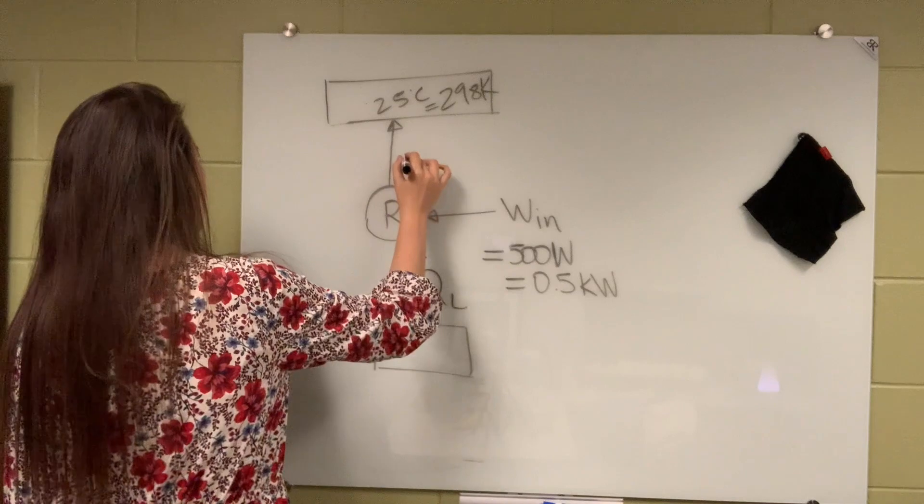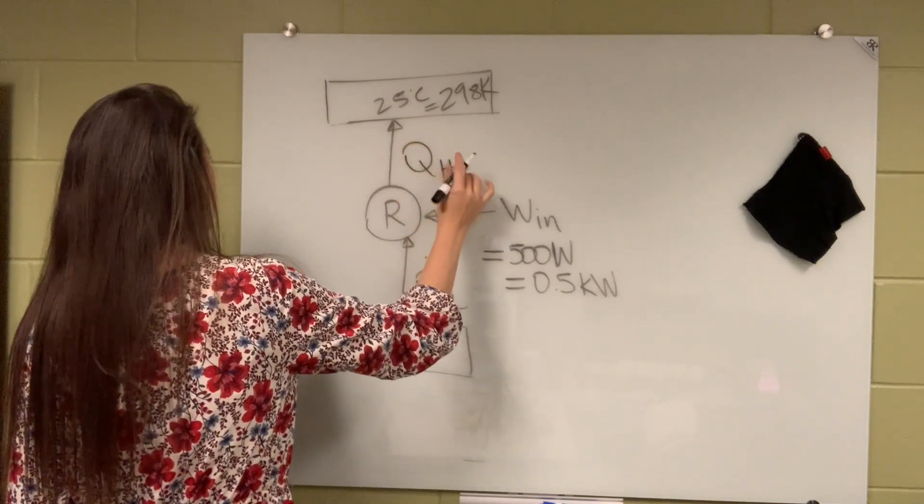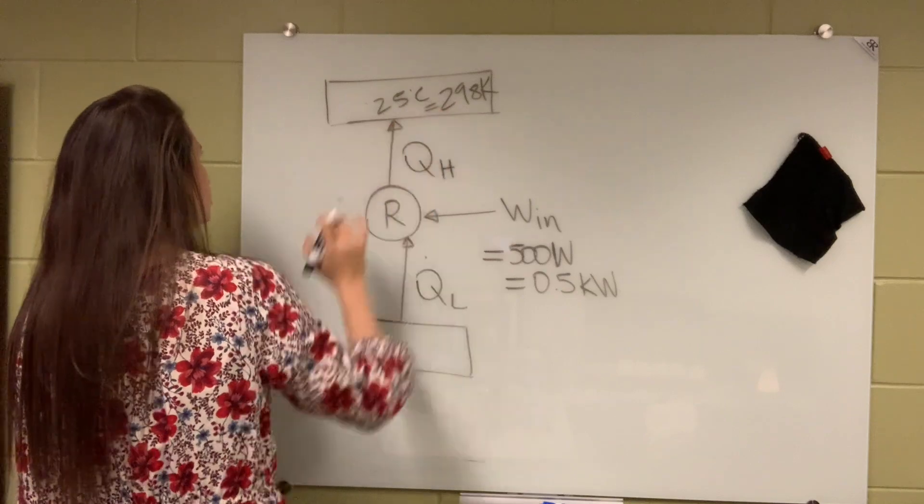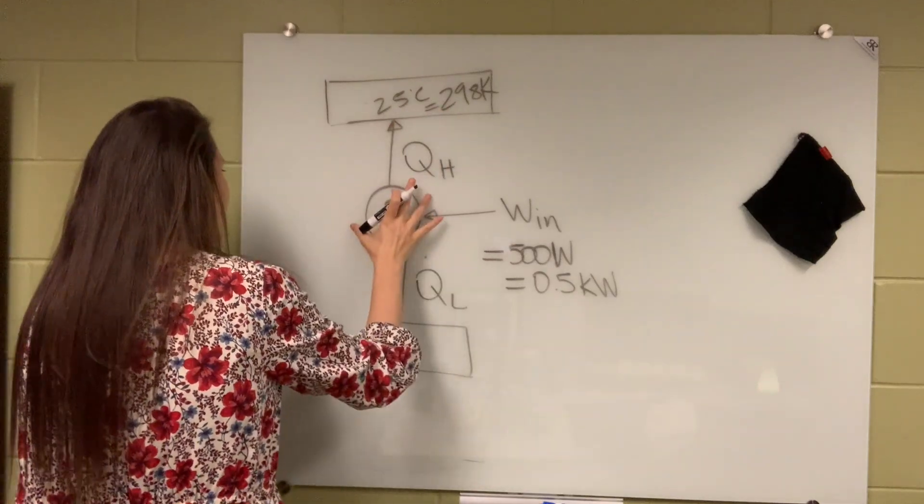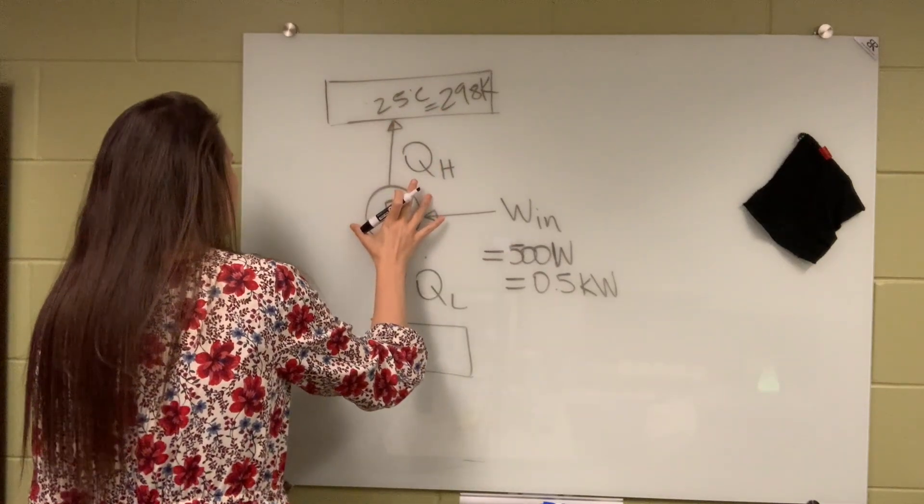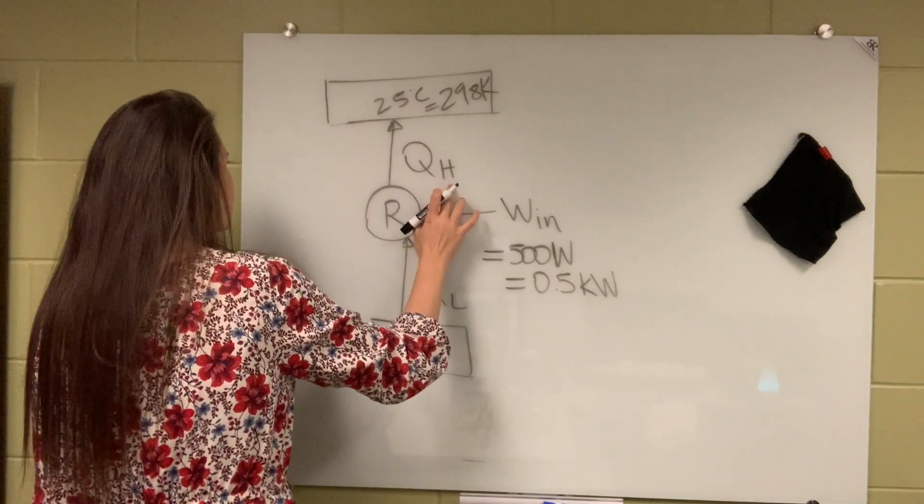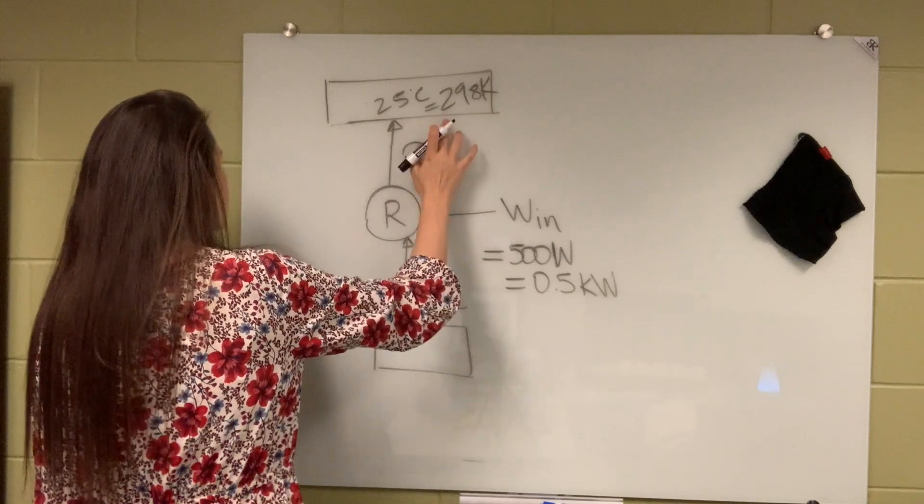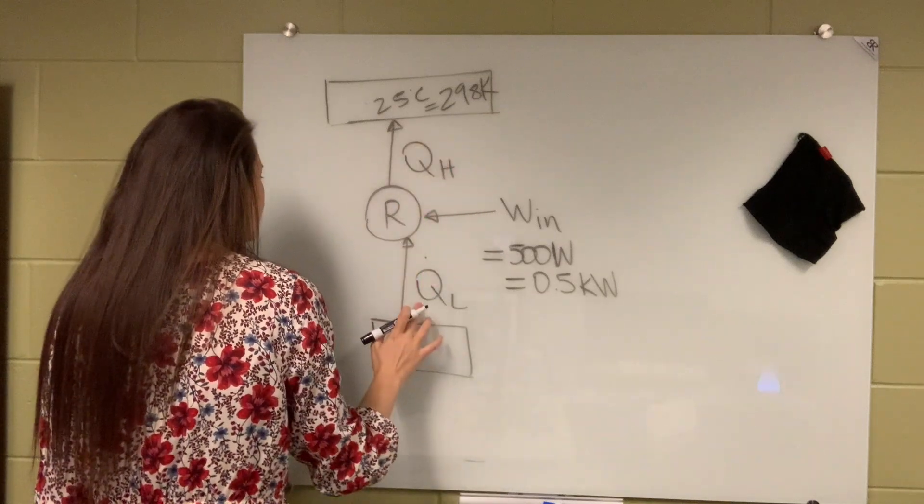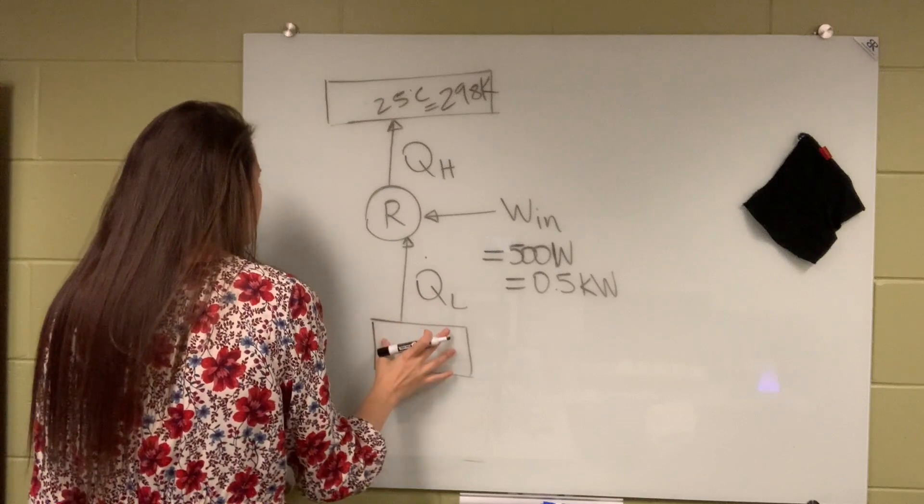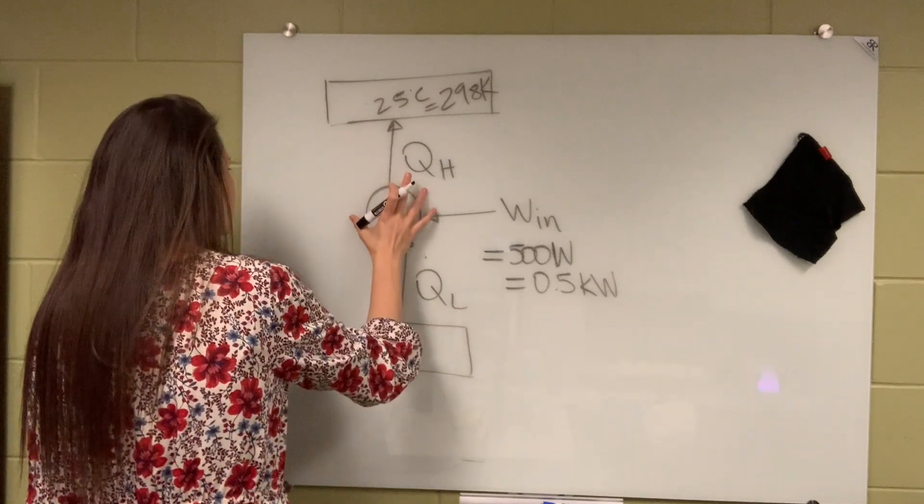Right? And this is QH. So the heat interaction between the high temperature reservoir and the device, cyclic device, is symboled with Q with a subscript H, meaning high temperature source. Okay? And then this one is the heat interaction between the low temperature environment and the device, cyclic device, therefore it has the subscript L.